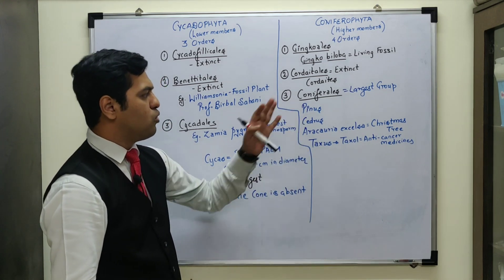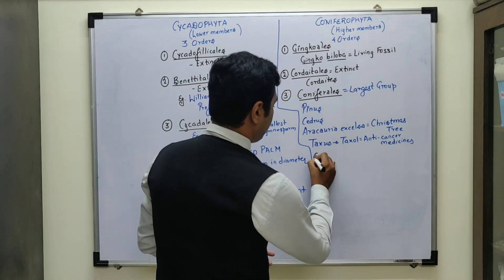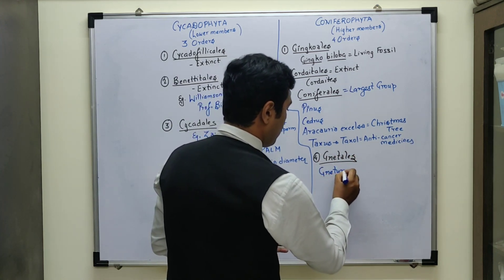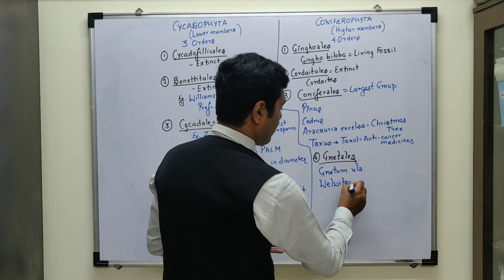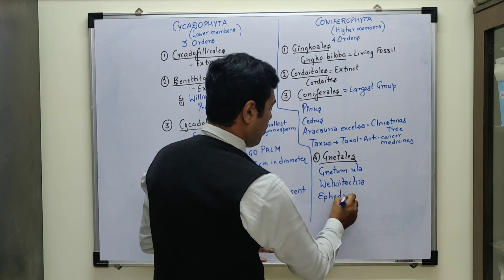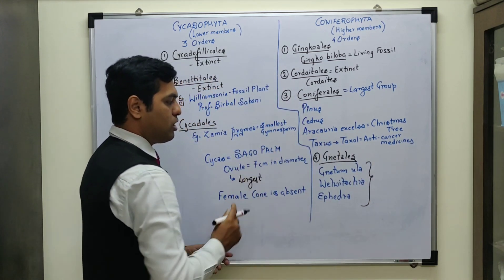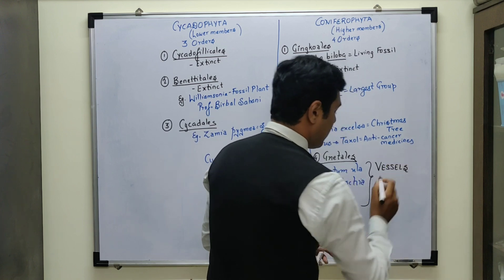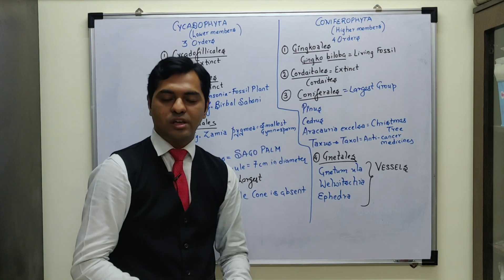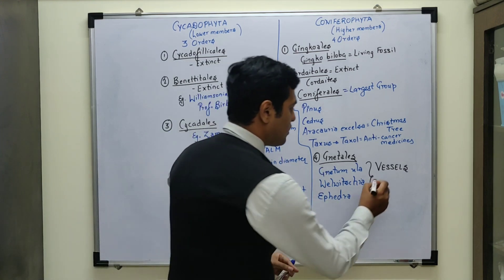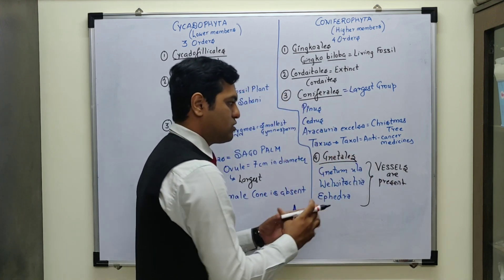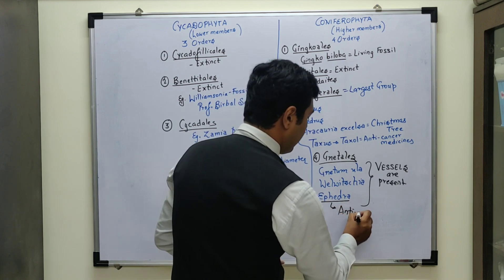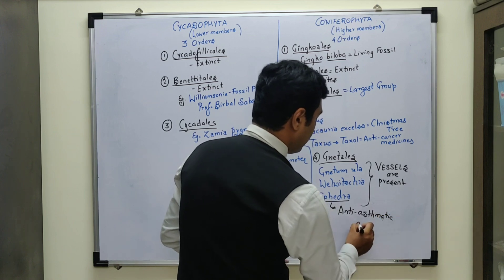The fourth and final order is Gnetales. In Gnetales, some of the examples are Gnetum, Welwitschia, and Ephedra. One classic feature of the members of order Gnetales is the presence of vessels. Usually in gymnosperms, the xylem only consists of tracheids and does not have xylem vessels, but vessels are present in all three plants belonging to Gnetales — so this is an exception in Gymnospermae.